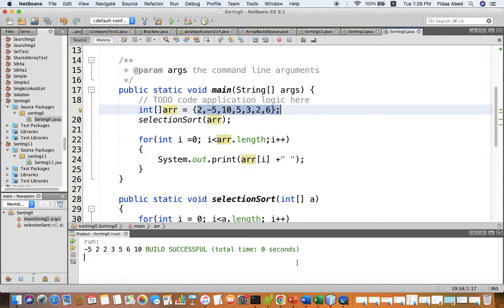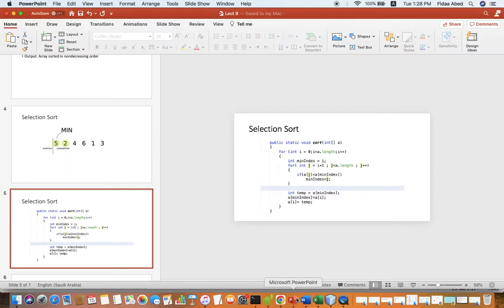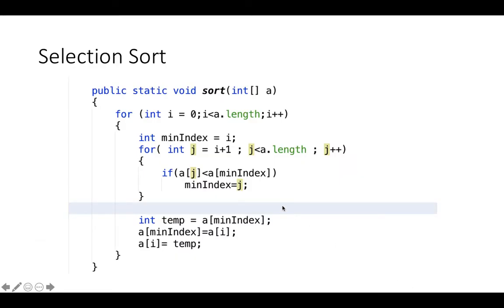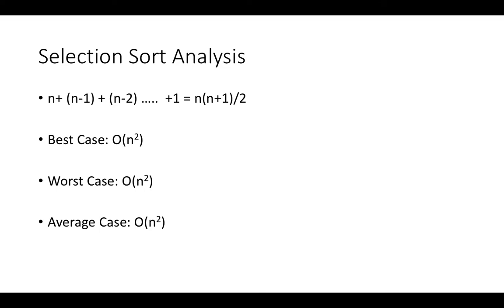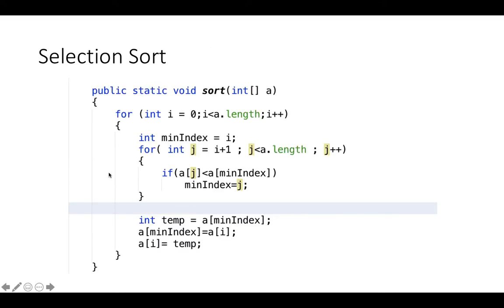You can see that we sorted the array. We have no problem with duplicated values or negative values. Going back to the slide: this is the selection sort method. For the analysis, you can see there is an outer loop and an inner loop — the outer loop runs n times.